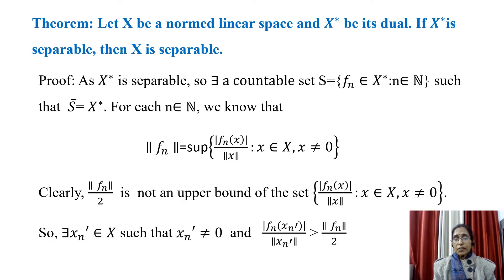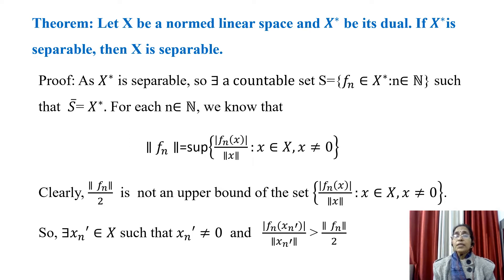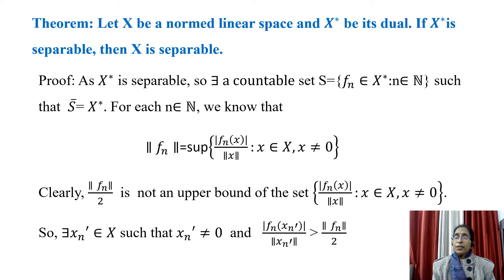Now we have another application of the Hahn-Banach theorem. The theorem states: let X be a normed linear space and X* be its dual — that is, the set of all bounded linear functionals on X, which is also a linear space. If X* is separable, then X is separable. A space X is said to be separable if it has a countable set whose closure equals X.